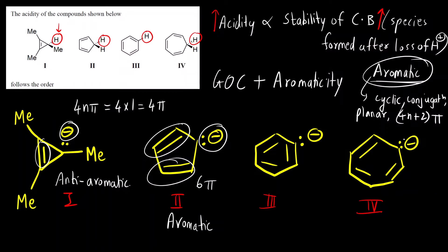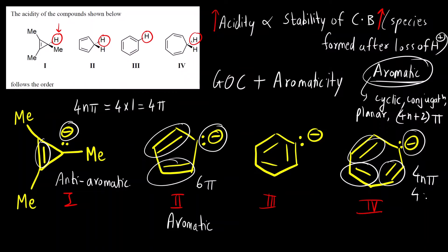For compound 4, if you count: 2, 4, 6, and 8 — so this also follows the 4n pi rule. With n = 2, we get 8 pi electrons, so this is also anti-aromatic.